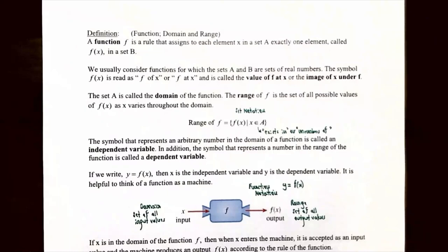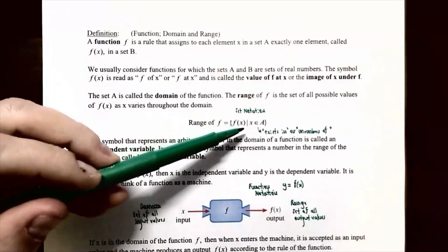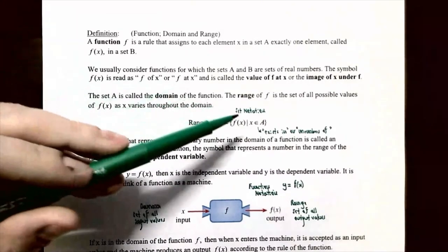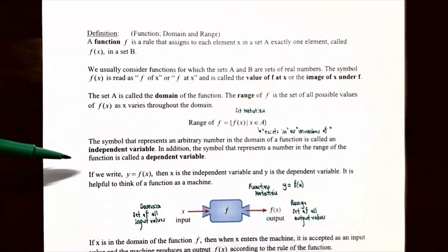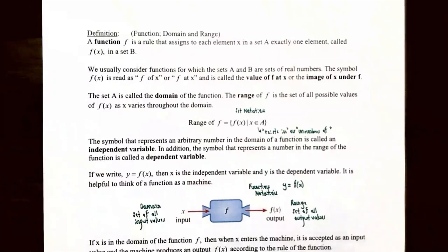The range can be written using set notation as the set of all y values or output values f(x), such that x is a member of set A, the domain. The variable representing any number from the domain is called the independent variable — the input values. The variable representing all output values is called the dependent variable, because those values depend on what value you substitute in for x into the function.